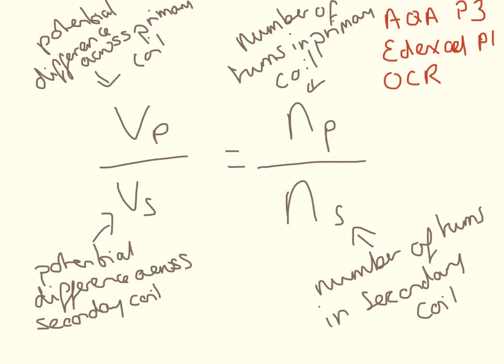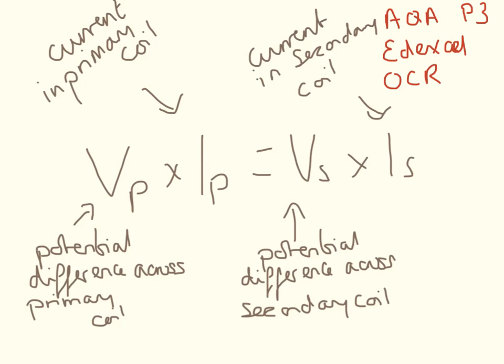So the only ones that have units on here are the potential difference, and potential difference is in volts. Number of turns is just the number of turns, so we don't need the units for these ones. And the last one that you'll need for AQA, we have potential difference in volts, and current in amps.